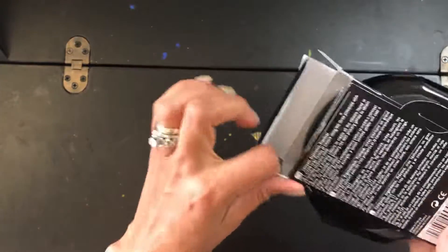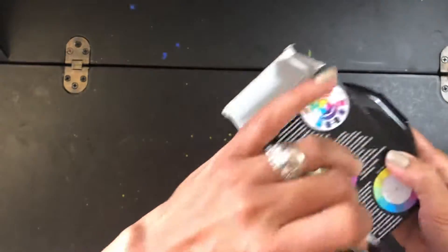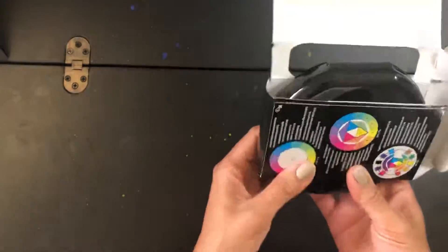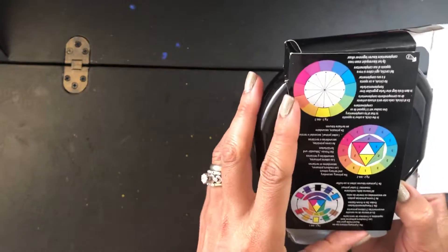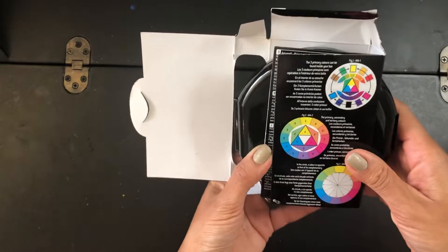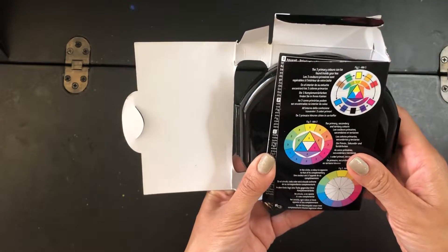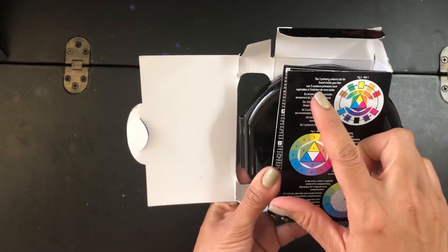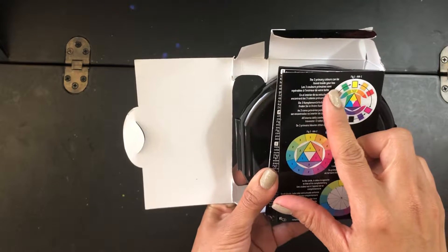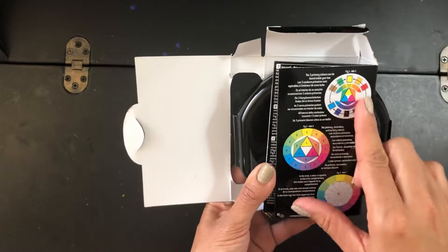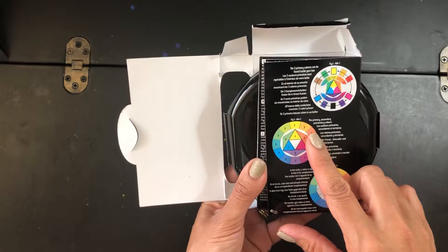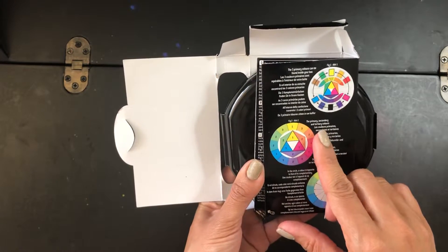Okay, this is interesting. So here in the back it has some, you can see it wrong here. Some color theory. The three primary colors can be found inside your box. Yeah, in here, primary, secondary, and tertiary colors. So they give you like a color guide there.